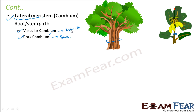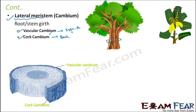With this discussion on meristematic tissues, we can now move to permanent tissues. Before that, looking at this slide on vascular cambium and cork cambium: if you look at the cross section of a tree, cork cambium is one of the outermost layers which later forms the bark, while vascular cambium is present towards the interior. This exact structure will be discussed in detail later.